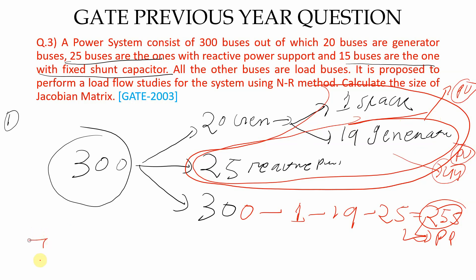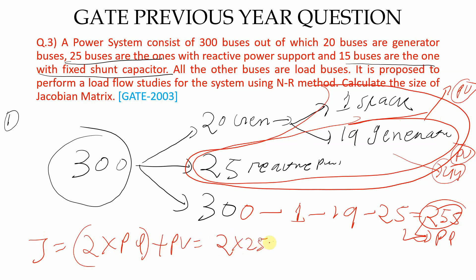Now calculating the Jacobian matrix size: 2 × (PQ buses) + (PV buses) = 2 × 255 + 44 = 554. So the size of the Jacobian matrix is 554 for this GATE question.